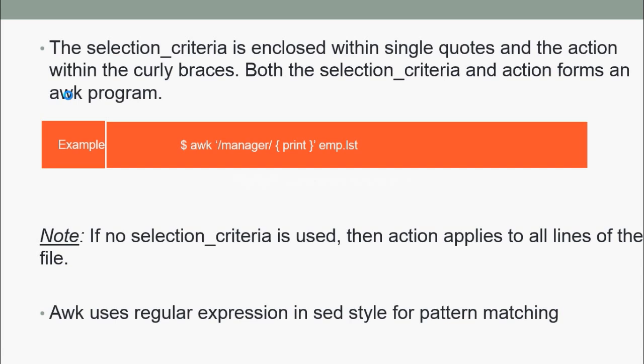Let us see one example: awk /manager/ {print} emp.lst. In the above example, manager is the selection criteria which selects lines that are processed in the action section, i.e., print. Since the print statement is used without any field specifier, it prints the whole line.